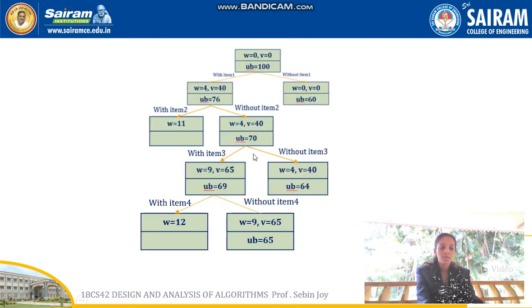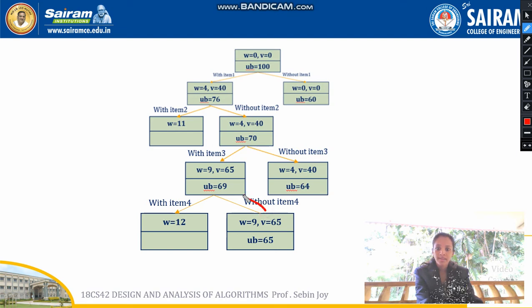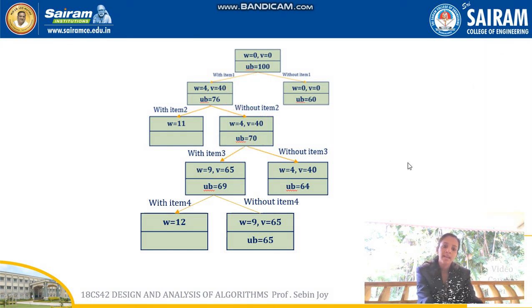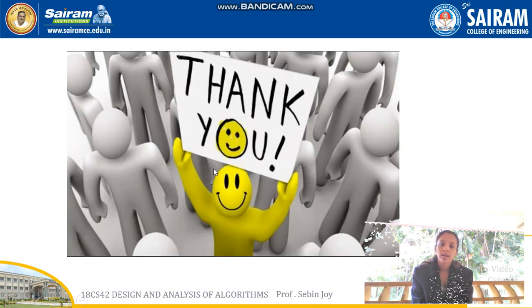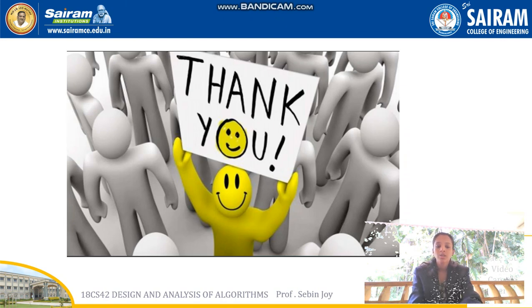After completing the state space tree, we find the optimal solution by tracing back from the highest-value leaf node to the root. Tracing back: without item 4, with item 3, without item 2, with item 1. So items 1 and 3 are placed in the knapsack. This is how you solve the Zero-One Knapsack problem using Branch and Bound. This is an important question from Module 5. Try to solve different problems. Thank you.